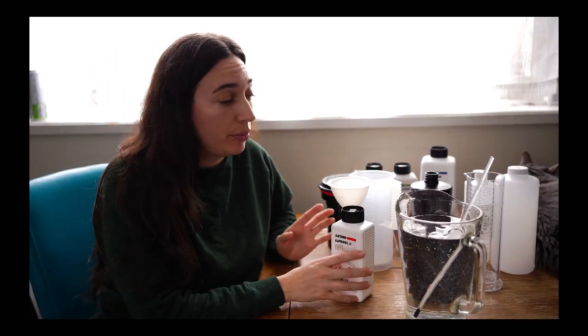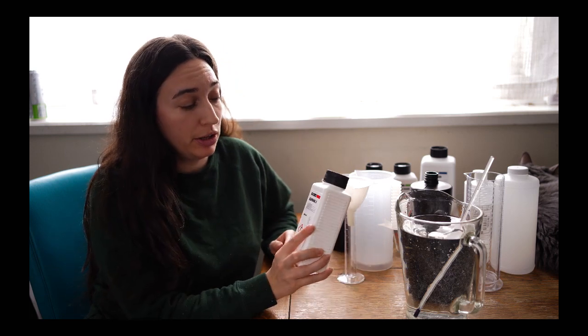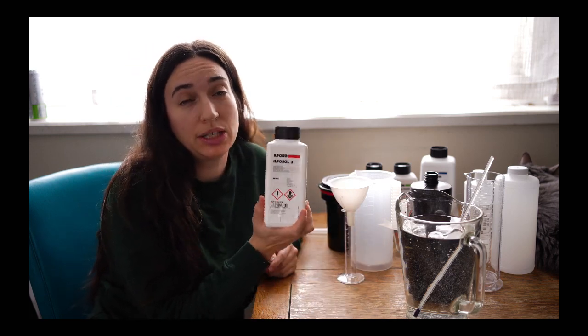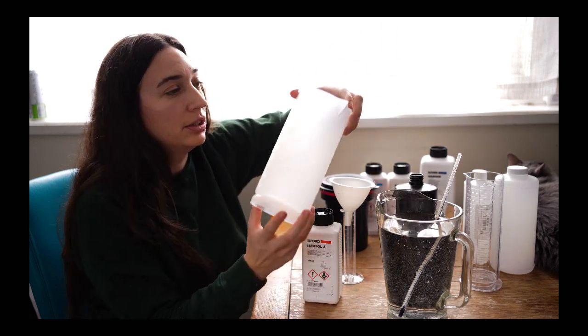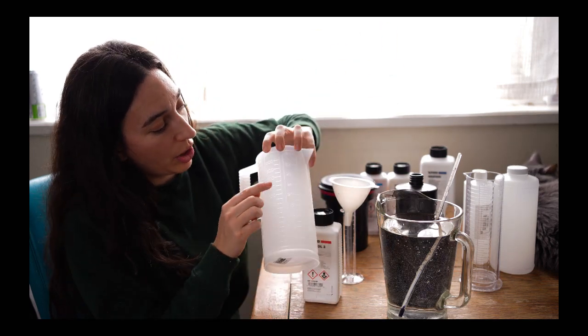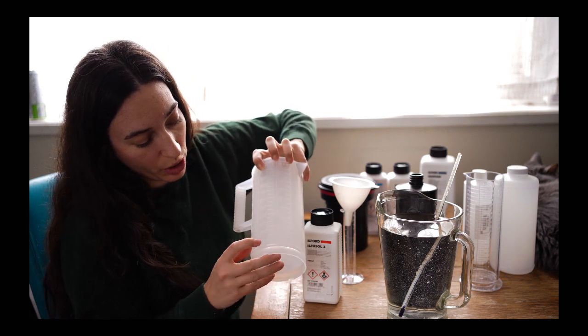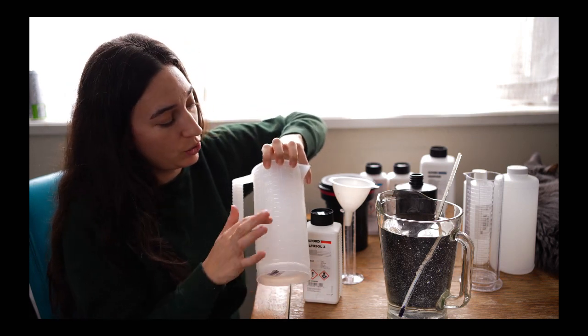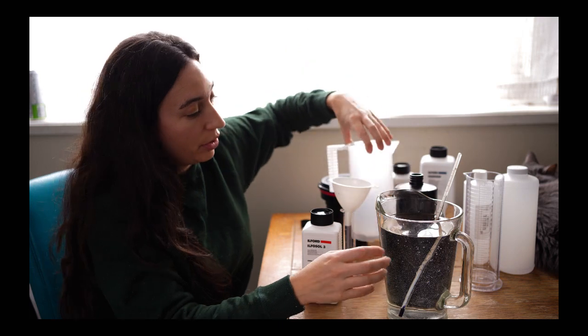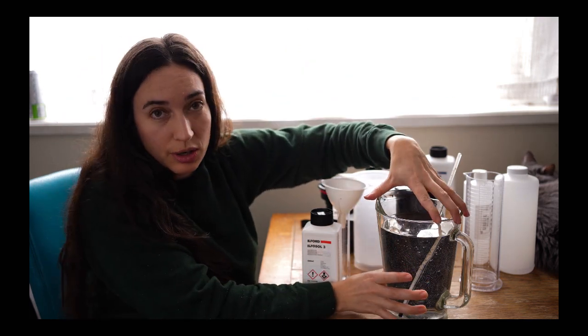I'm going to start with mixing the developer. I've got the Ilford developer. I'm going to do it in a 1 to 9 ratio. I'm going to use this little jug here. I've got 1,000 there for milliliters. And I'm going to do 100 will be developer. And then the rest will be water. My water is already mixed here. And it's 20 degrees Celsius.